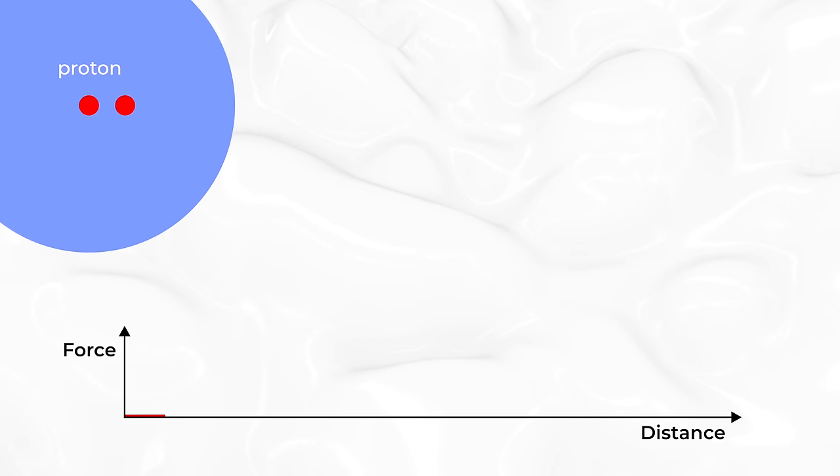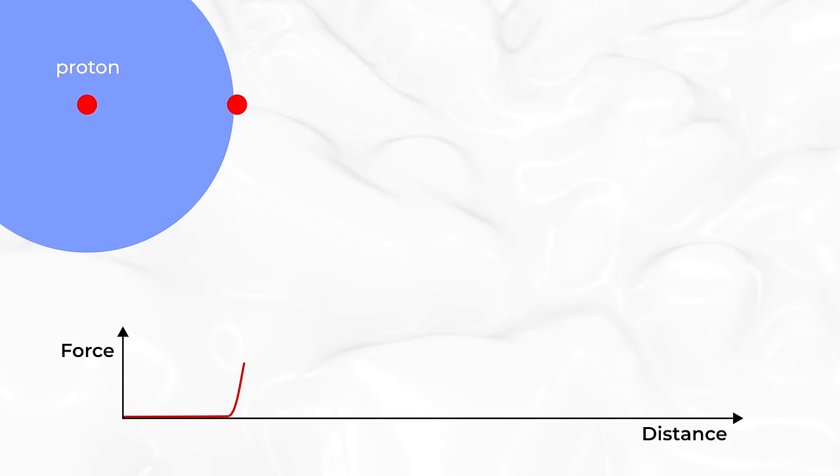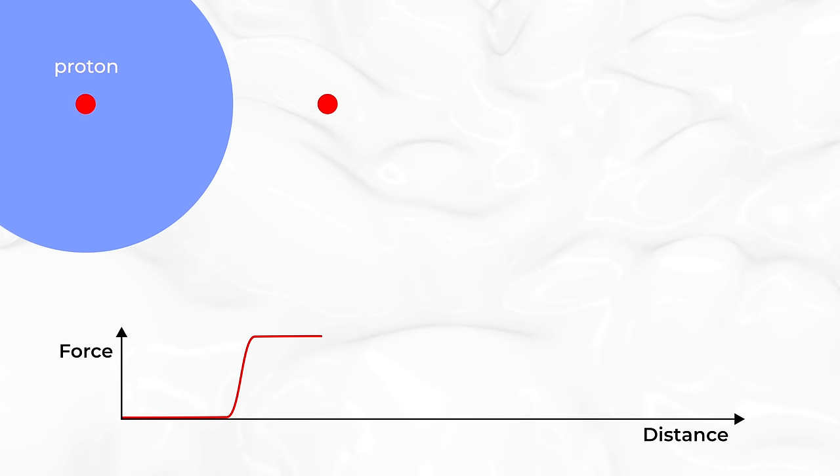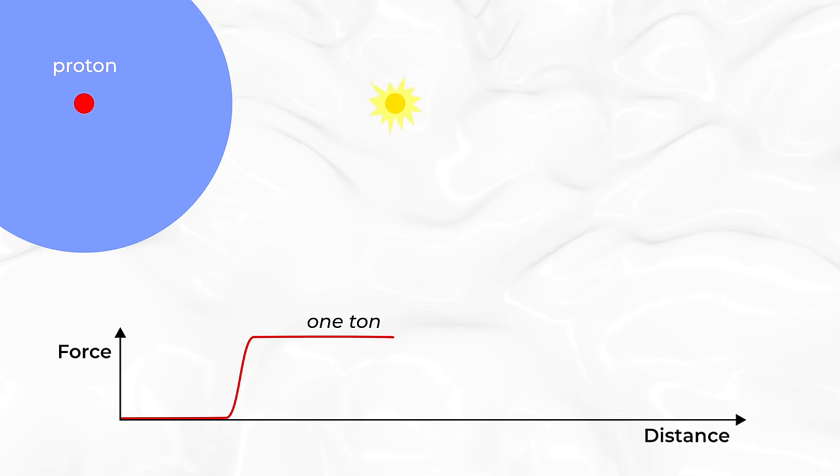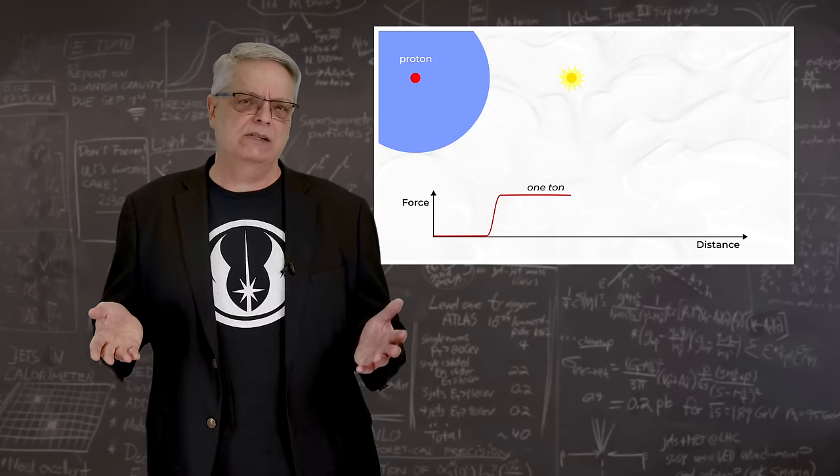However, when they get about a femtometer apart, which is about the size of a proton, the force gets stronger, rising to about 10,000 newtons, or a bit over a ton for my American viewers. The weird thing is that the force doesn't change as the particles get farther apart. It's basically constant.